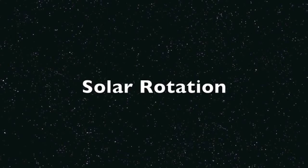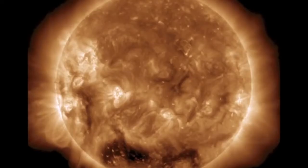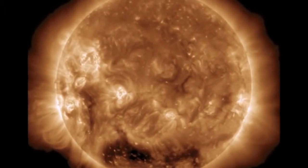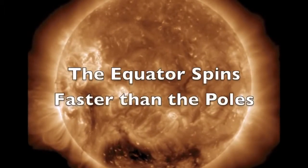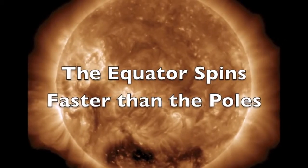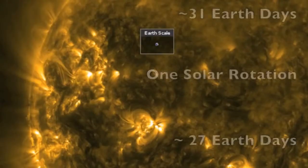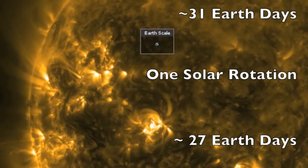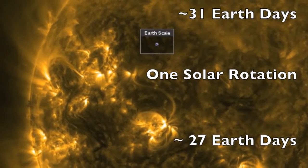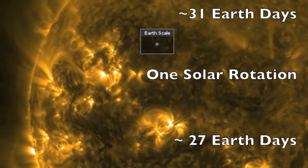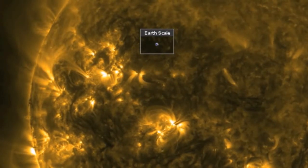How long does it take for the Sun to rotate one time? This is a difficult question, because the Sun does not rotate at the same speed at different latitudes. The equator rotates about 10 days faster than the polar regions, with the majority of the Sun having an average of about 28 days — 4 weeks — coincidentally the same as one lunar cycle for Earth's moon around our planet.